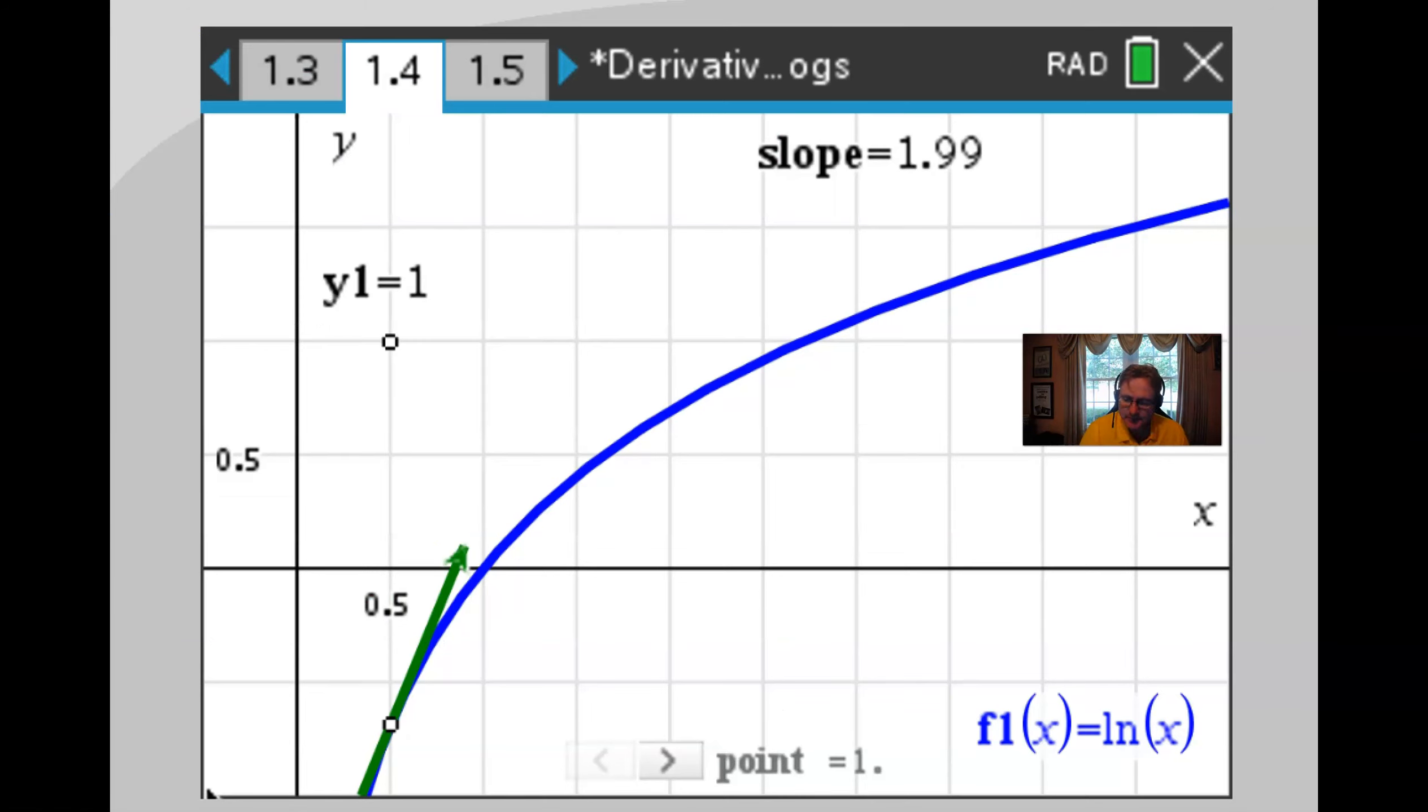So here we are. We have this activity that's entitled the derivative of logs, which will be made available to you if you're a student of mine. But if you're not, I think you can watch through this and get a taste for what's happening here. So hopefully what you see is from the graph, I do have the function f of x equals natural log of x sketched. This is our traditional graph of natural log. Notice my x and y axes are partitioned into increments of one half units. And I have a tangent line that I am able to move around.